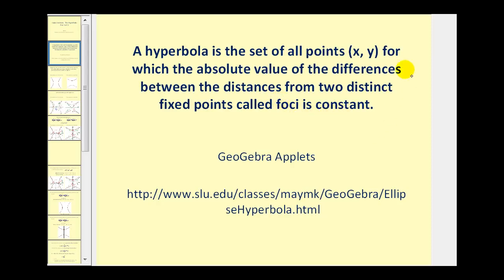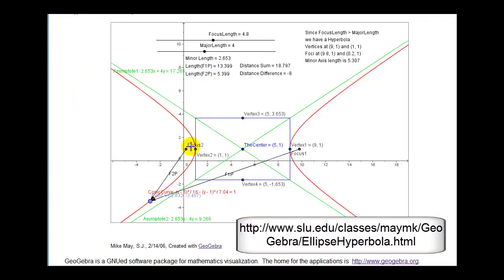The best way to get a feel for this definition is to take a look at an applet. The hyperbola is graphed here in red. The two foci are here and here, and you'll see two segments from a point in blue to both of the foci. That definition is saying that if we find the difference of these two lengths and take the absolute value, it'll be the same for any point on the hyperbola.